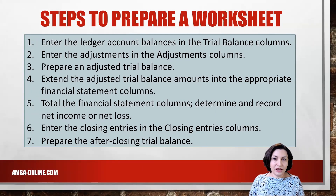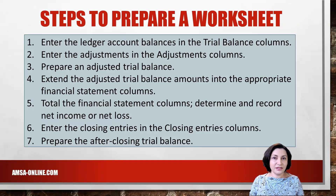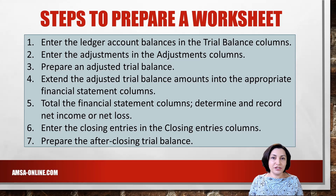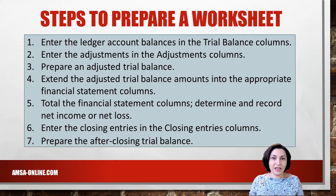The preparation of the worksheet can be done manually or with the help of an Excel spreadsheet and involves five basic steps. We will add two more steps to also use it for closing entries. The steps are: enter the ledger account balances in the trial balance columns; enter the adjustments in the adjustments columns; prepare an adjusted trial balance; extend the adjusted trial balance amounts into the appropriate financial statement columns; total the financial statement columns; determine and record net income or net loss; enter the closing entries in the closing entries columns; and prepare the after-closing trial balance.